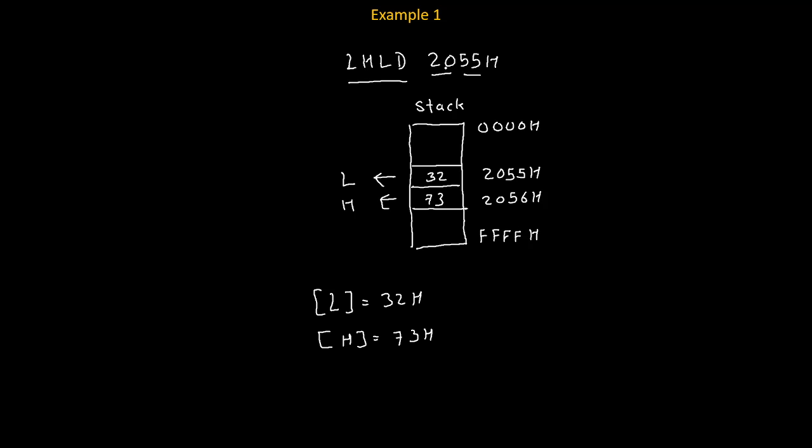And finally, we will talk about how many flags this instruction is going to affect. Now here, since we are transferring data inside the L and H register, we are not modifying the content of accumulator. In general, we may say that data transfer group instructions don't affect flags. That's why because of LHLD 2055 instruction, none of the flag will get affected.